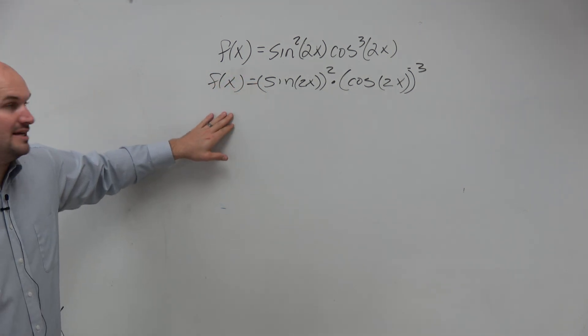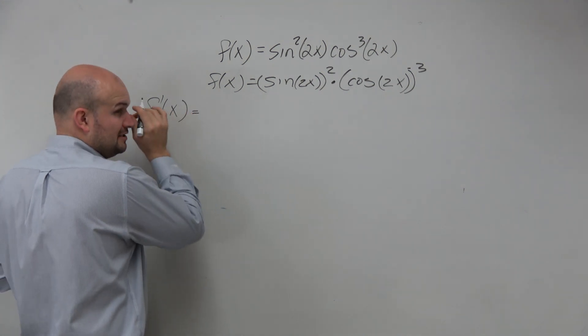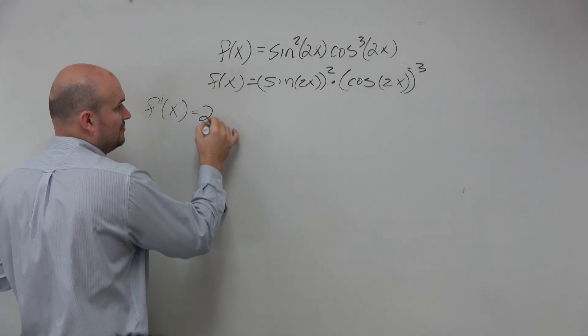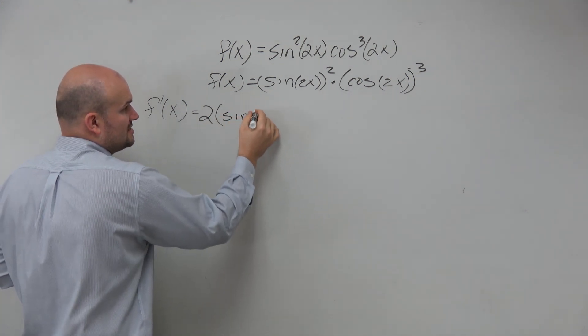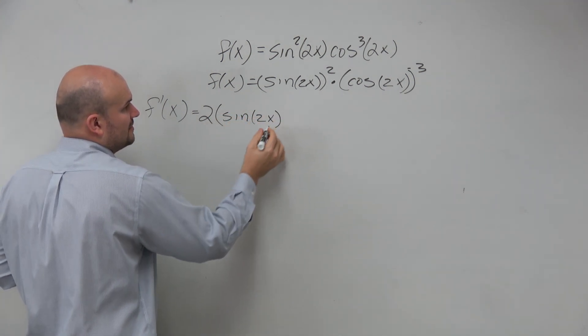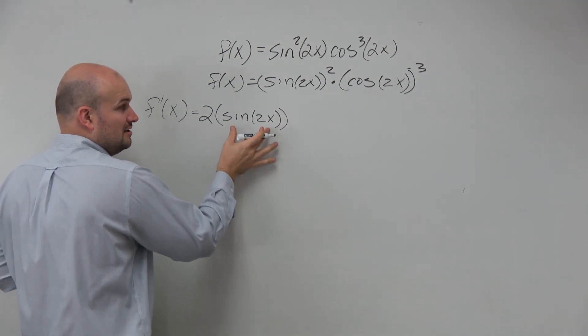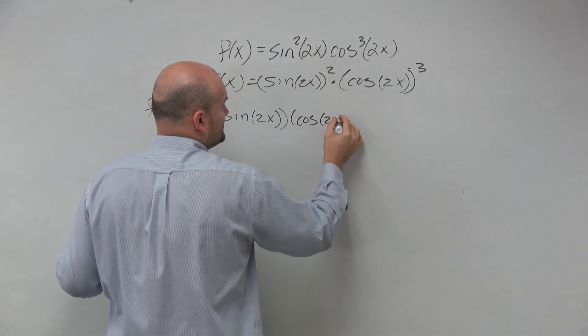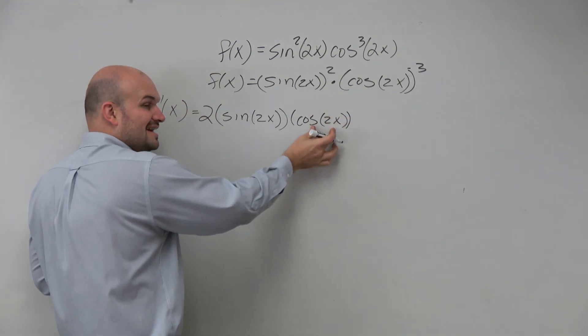So let's look at taking the derivative of the first function. To take the derivative of the first function, we're going to bring down the 2 times the child function, sine of 2x times the derivative of the child function, which is cosine of 2x times the derivative of inside of...